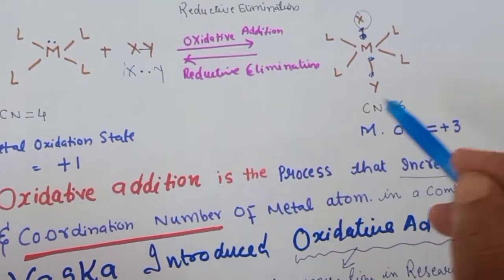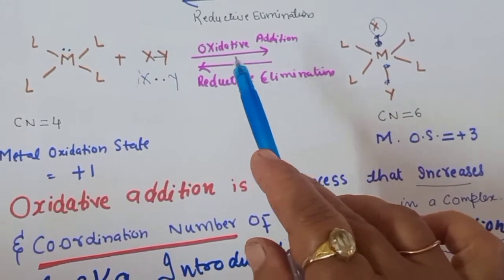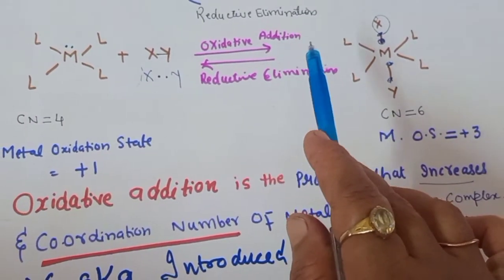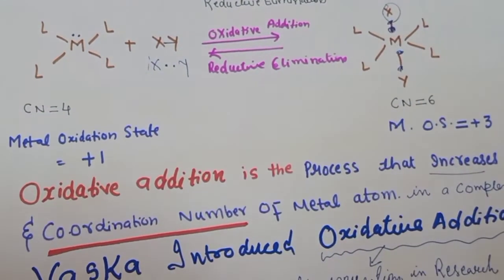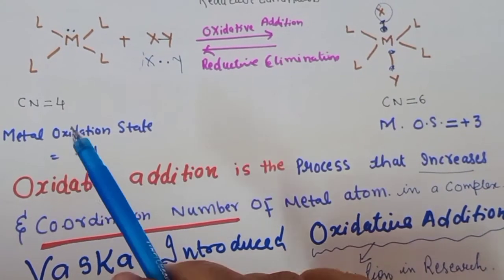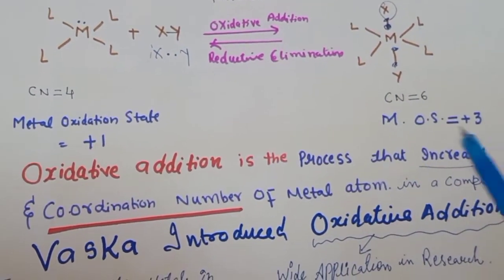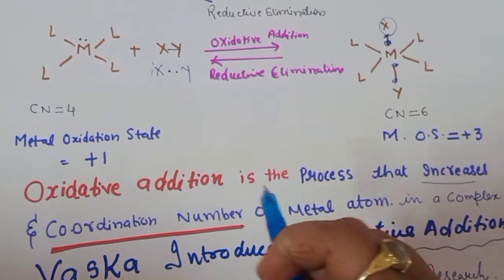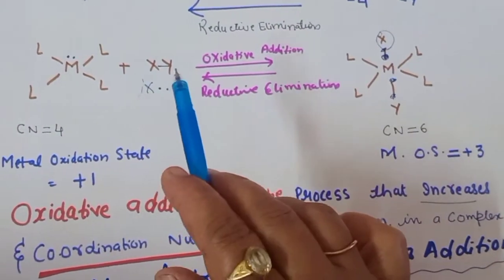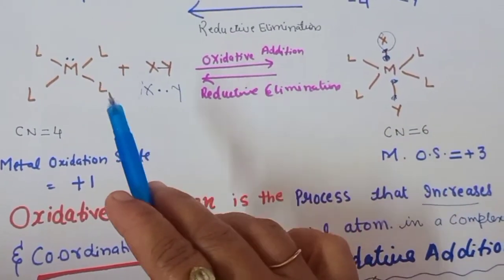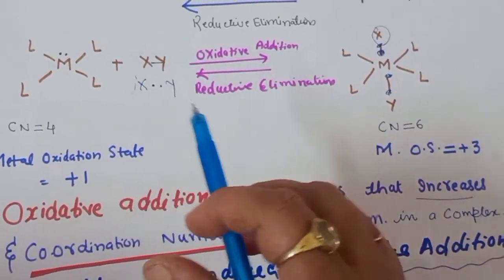The metal was first in a lower oxidation state and changes to a higher oxidation state. The coordination number changes from 4 to 6. The important thing to remember for oxidative addition: the oxidation state increases by +2, the coordination number increases by +2. Electrons are lost from the metal, meaning the metal is oxidized.